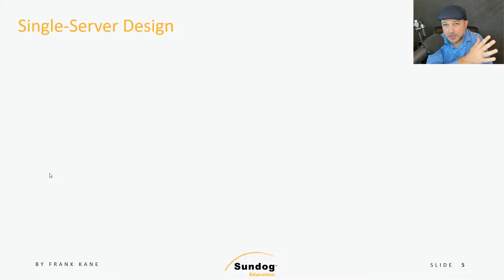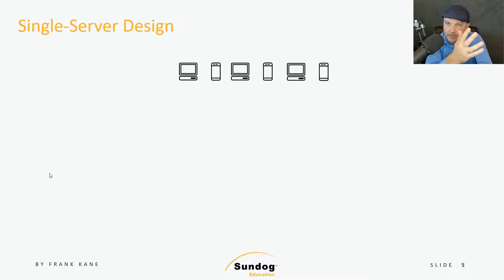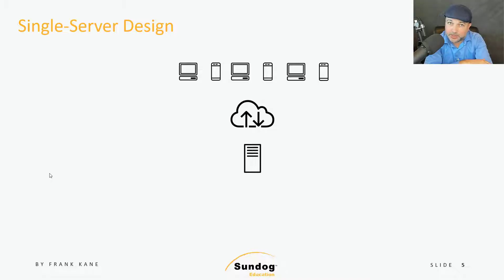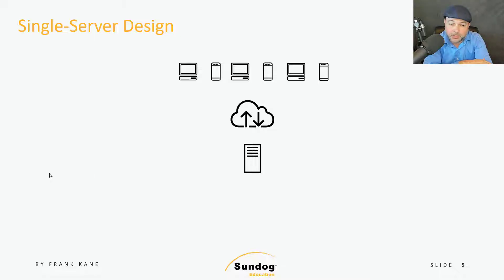Let's start with a single server design — one that does not scale — and work our way up to one that does. In a legacy single-server design, you have clients out on the Internet running phones, laptops, or PCs, connecting through the Internet to one box. My personal website is set up this way; it doesn't get a lot of traffic and I don't really care if it goes down. I make sure the data is backed up so I can restore it, but it just doesn't get enough traffic for me to care much about it.